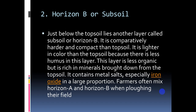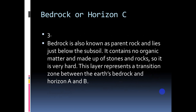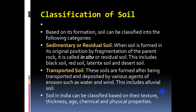Farmers often mix Horizon A and B when ploughing their fields. Horizon C, or bedrock, is also known as parent rock and lies just below the subsoil. It contains no organic matter and is made up of stones and rocks, making it very hard. This layer represents the transition zone between the earth's bedrock and Horizons A and B. This covers the soil profile.